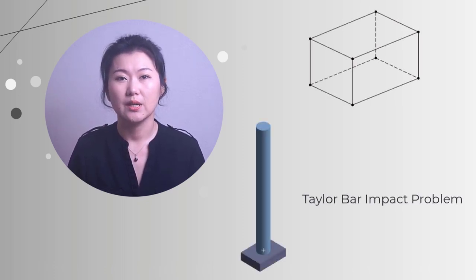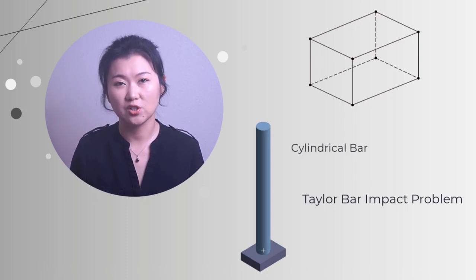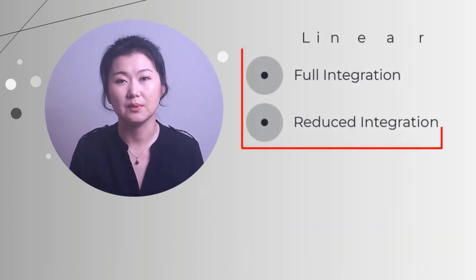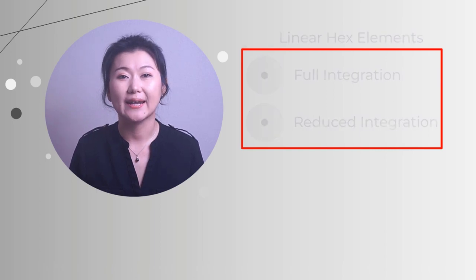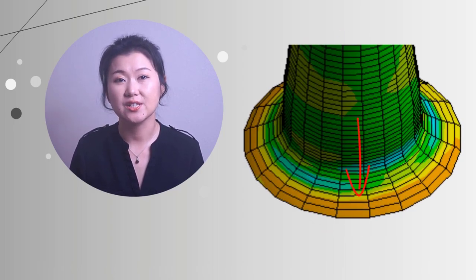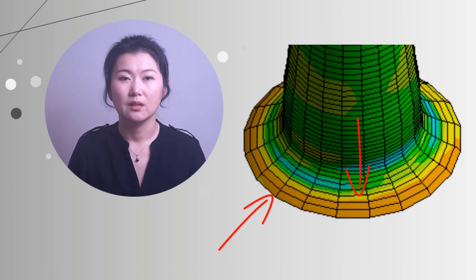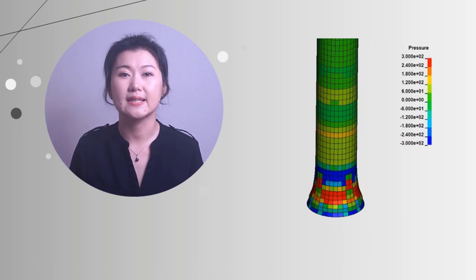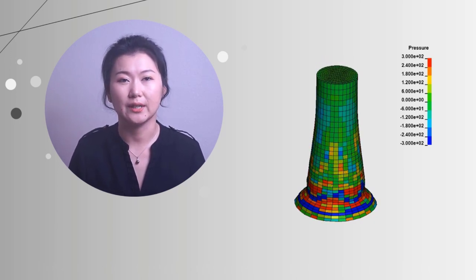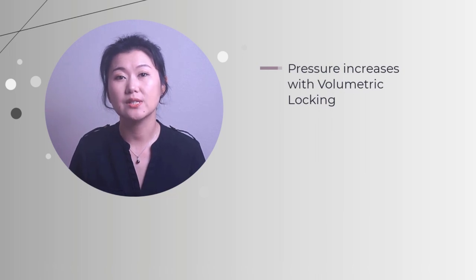Here, let's see what will happen if we use linear fully integrated hex element to solve the Taylor bar impact problem. It simulates a cylindrical bar with a high initial velocity impacting a rigid plate. The bar will experience severe plastic deformation around the impact area. The problem is solved by full integration and reduced integration linear hex element to compare. Now we're looking at equivalent stress contour plot over deformation animation. If we zoom in, we can see that the deformed surfaces and edges are not smooth when full integration linear hex is used. And if we check the unaveraged hydrostatic pressure, we can see that the model with full integration exhibits a checkerboard pressure contour, which is a clear sign of volumetric locking. We'll also notice that the pressure magnitudes increase substantially when volumetric locking exists.